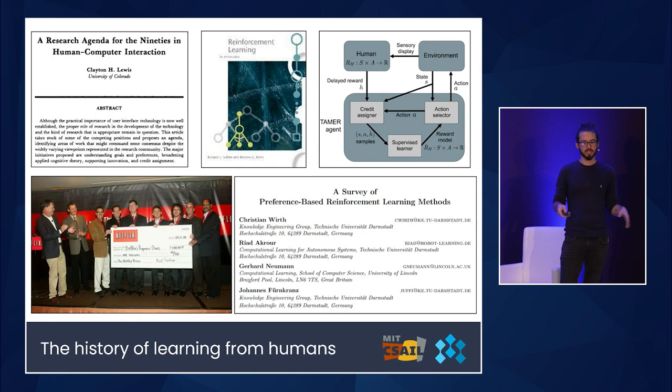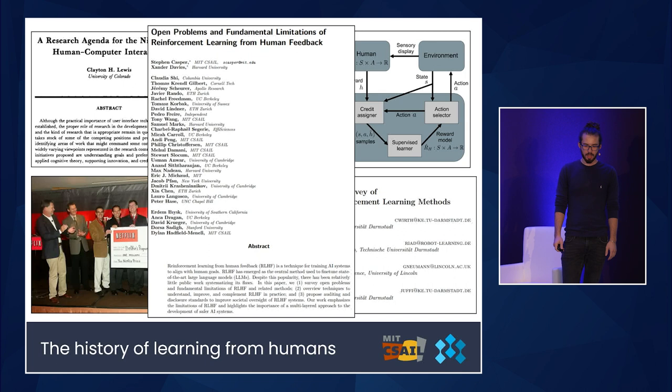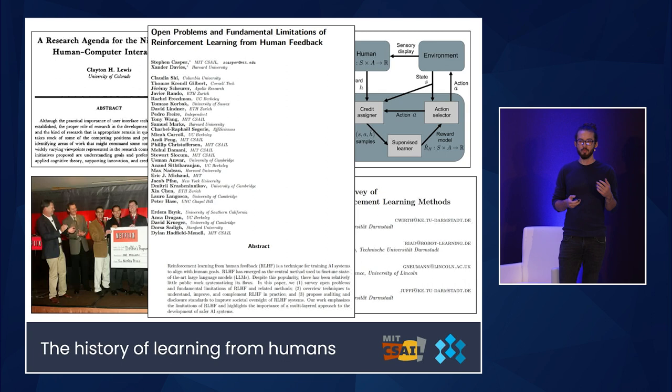Fast-forwarding to earlier this year: I was able to work with 31 co-authors on a paper titled 'Open Problems and Fundamental Limitations of Reinforcement Learning from Human Feedback,' where we do our best to give the most thorough and comprehensive outline we possibly can of all the issues and problems that RLHF is facing today.